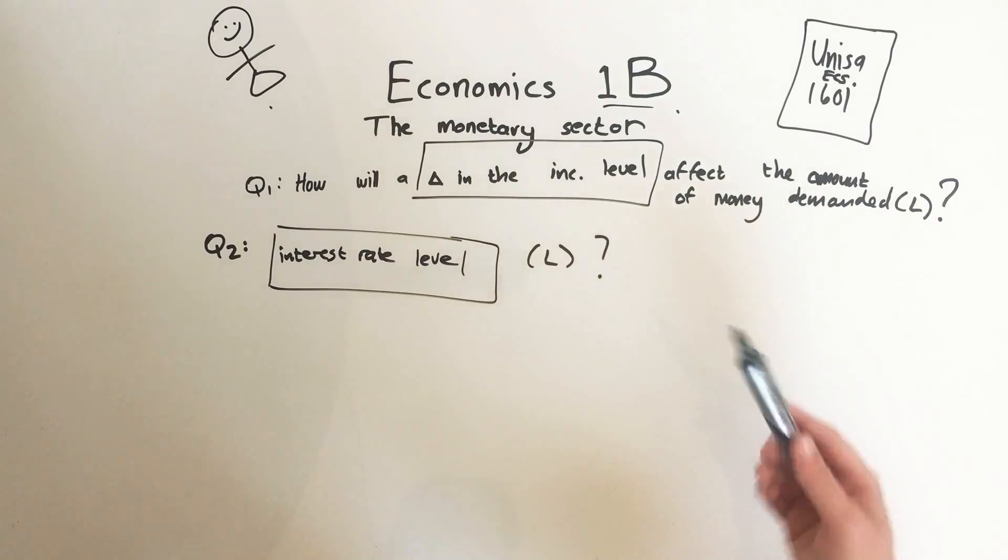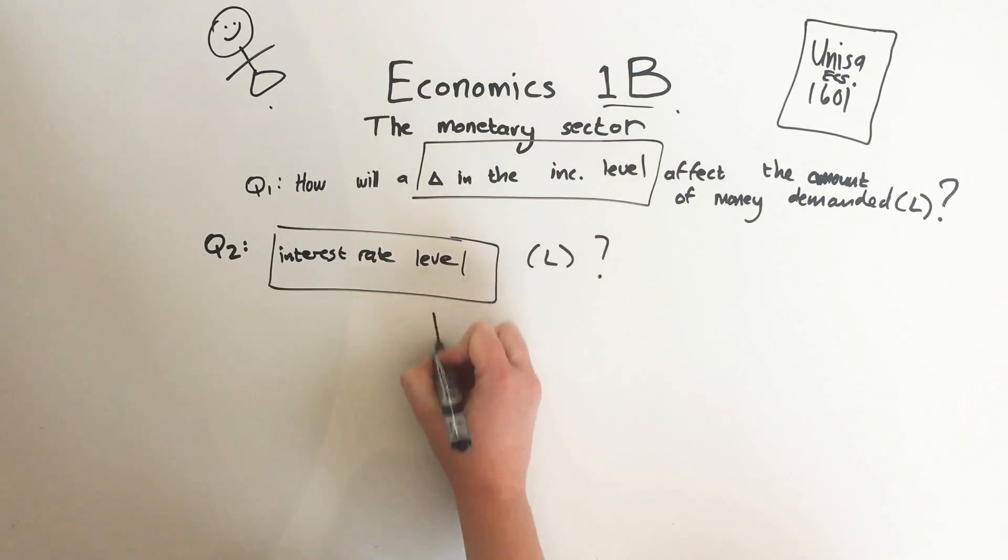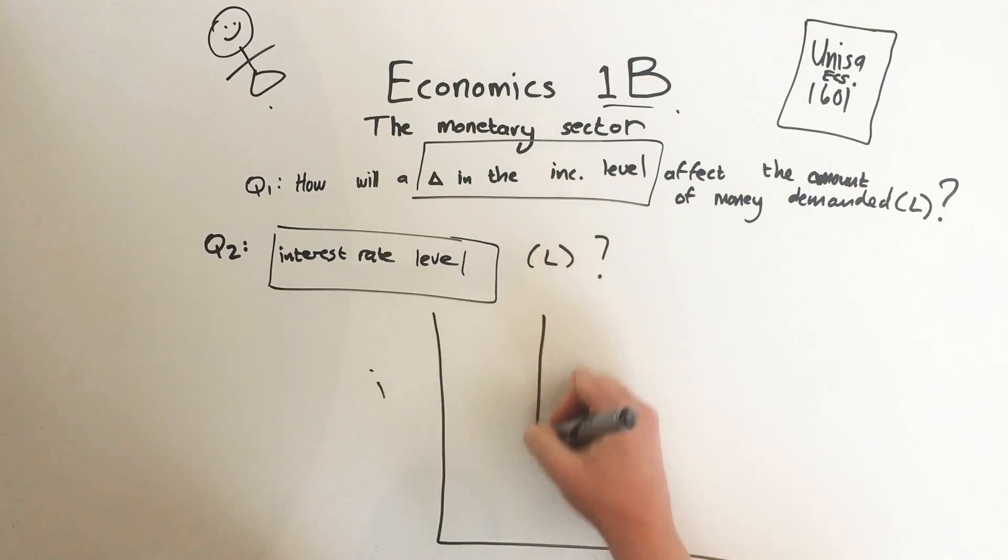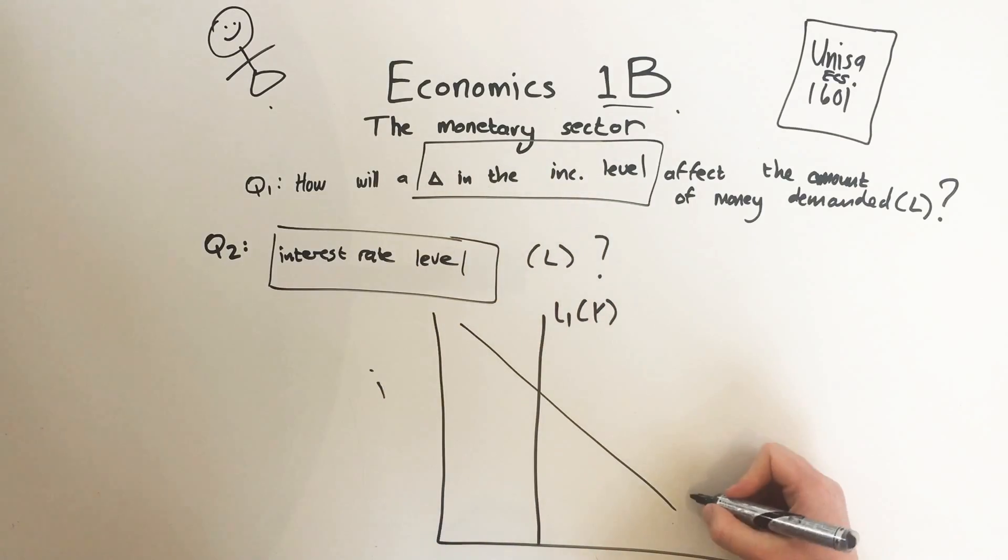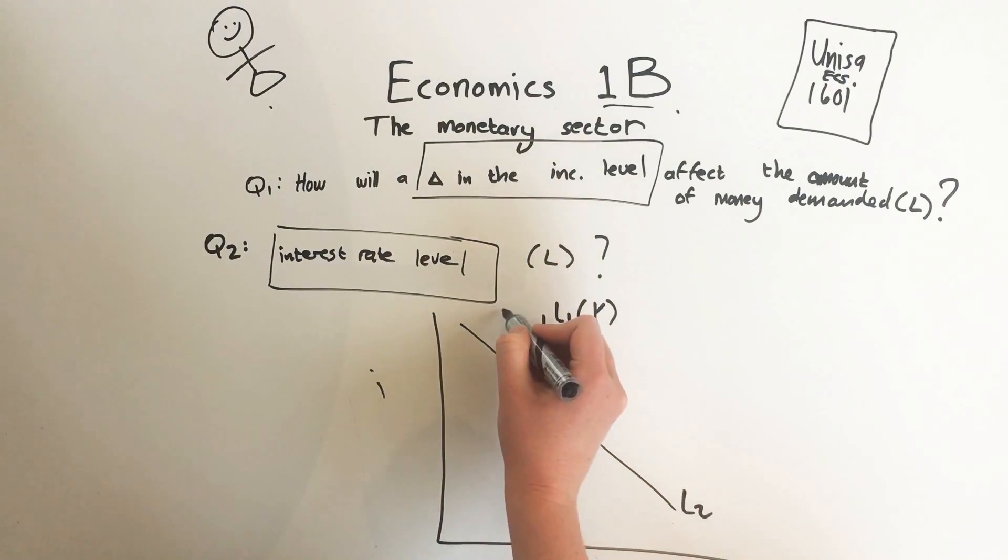Now when you draw the graph, we have interest rate and we have money. We have our L1, which depends on income, and we have our L2, which depends on interest rate. And then we have a total demand for money.